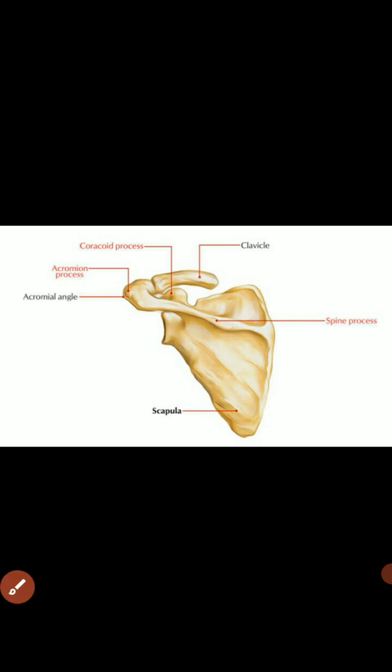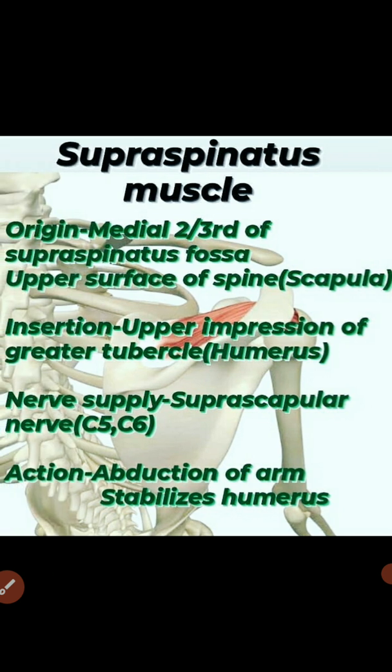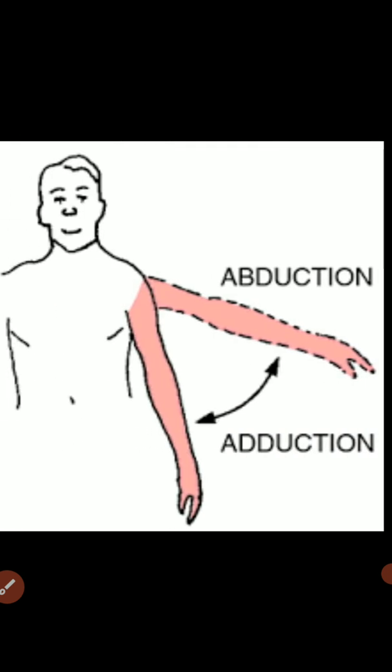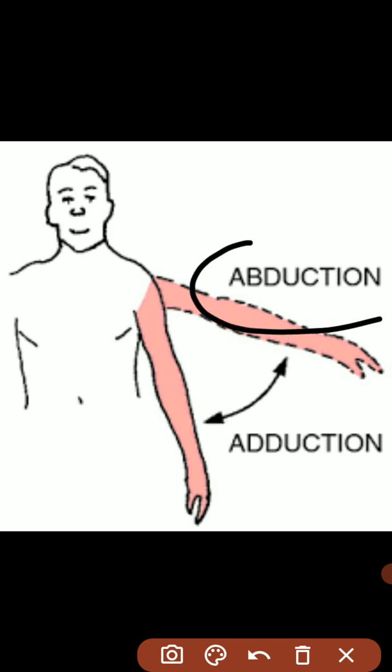We will be learning about scapula region muscles. First, supraspinatus muscle. Origin: medial two-thirds of supraspinatus fossa, i.e. upper surface of spine of scapula. Insertion: upper impression of greater tubercle of humerus. Nerve supply: suprascapular nerve C5-C6. Action: abduction of arm, stabilizes humerus — abduction meaning away from the body.